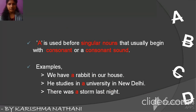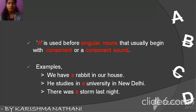A is used before singular nouns that usually begin with a consonant or a consonant sound. For example, we have a rabbit in our house. Rabbit starts with R, which is a consonant, so we put A: we have a rabbit.